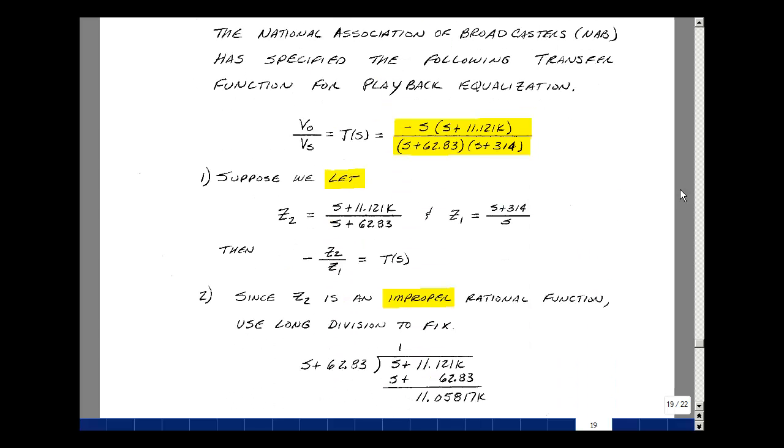If I use our inverting amplifier, it's a ratio of two impedances. So if we could break this apart into two impedances whose ratio would form this, then I could make the transfer function. Suppose I take the zero (S plus 11.121K) and the pole (S plus 62.83). When you form the ratio, then we have our transfer function T of S.